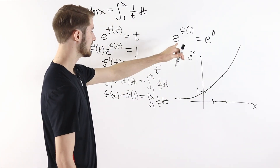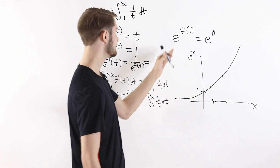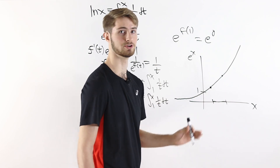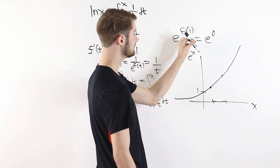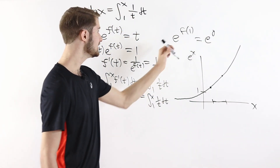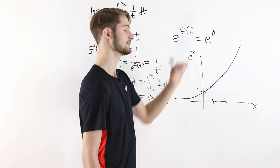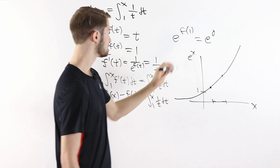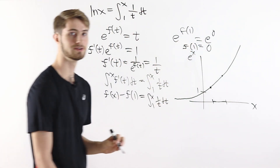So e to the x is an injective function, which means that if the two inputs are different, the two outputs are also going to be different. So if f of 1 were not equal to 0, then e to the f of 1 would also not be equal to e to the 0. But these two are equal, so the only way that's possible is if f of 1 is actually equal to 0.